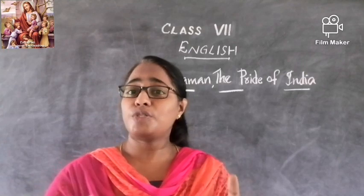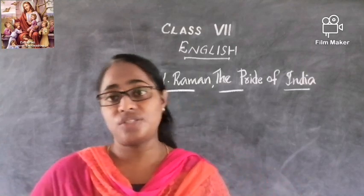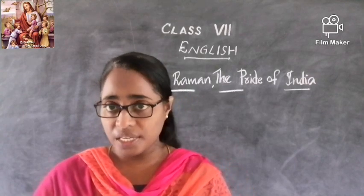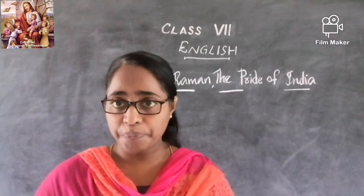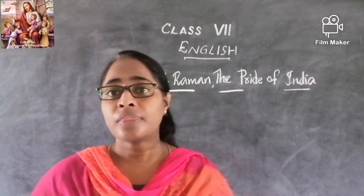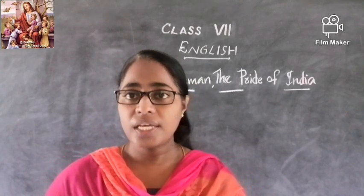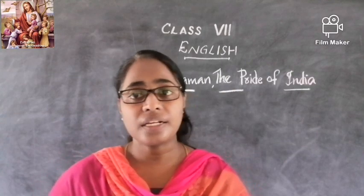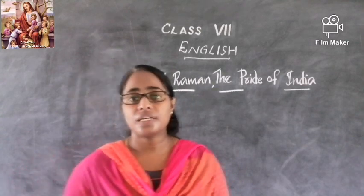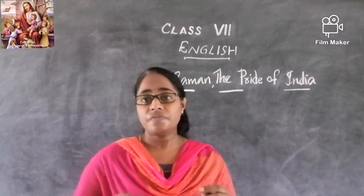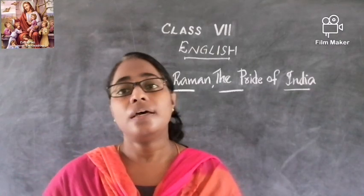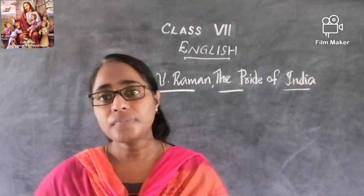Here you can see the Indian Association for the Cultivation of Science. The headquarters of this association, their science lab, was in Calcutta — specifically on Bowbazar Street, one of the streets of Calcutta. That is where the IACS headquarters was located.